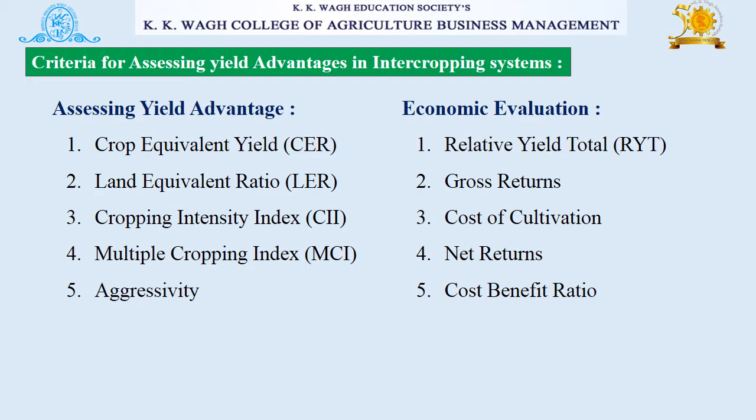The criteria for assessing yield advantages in an intercropping system include: crop equivalent yield, land equivalent ratio, cropping intensity index, multiple cropping index, and aggressivity.